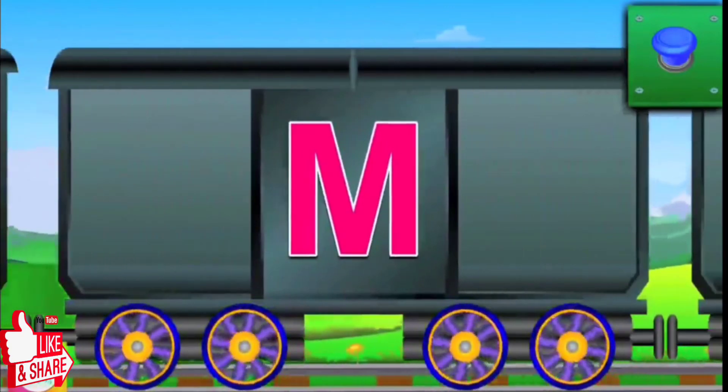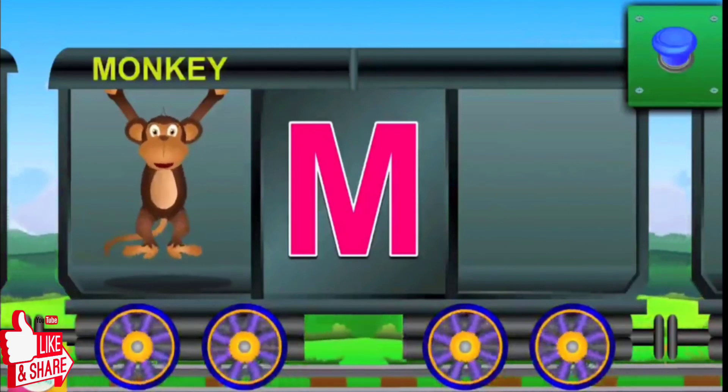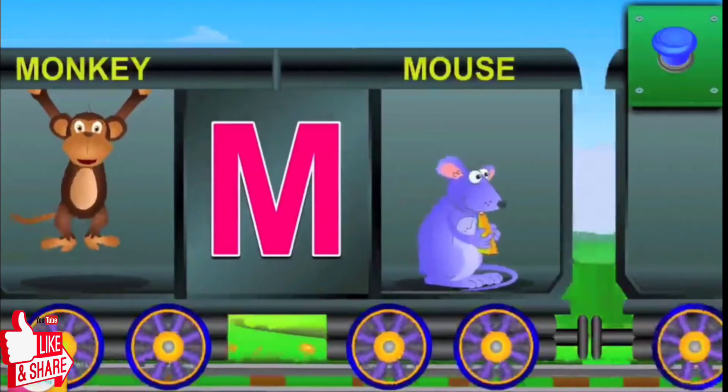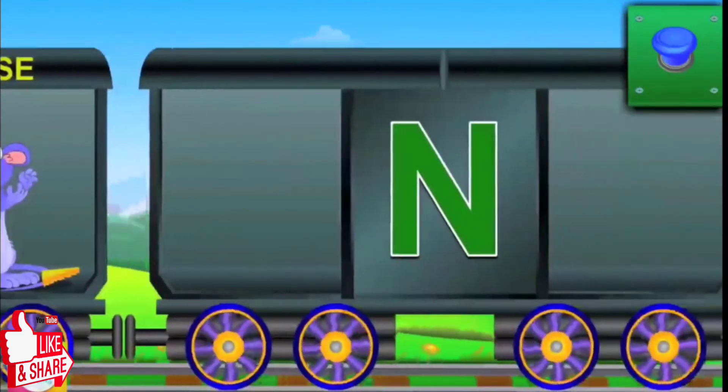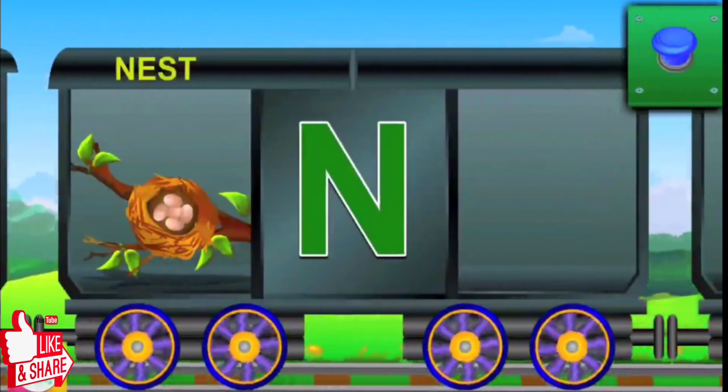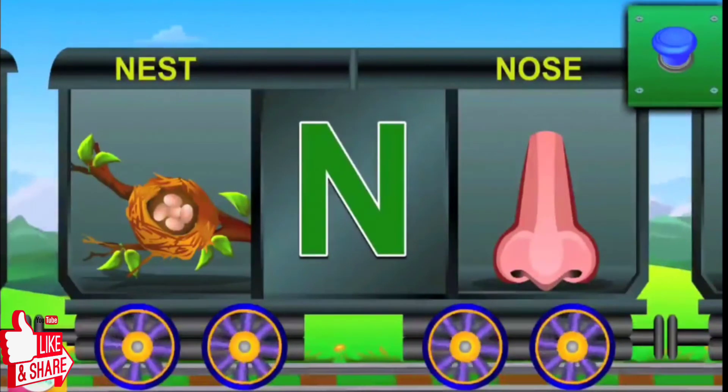Now meet M. M for monkey, and the monkey is funny. M for mouse, and the mouse eats the cheese. Look at N. N for nest, and the nest is on the tree. N for nose, and the nose is long.